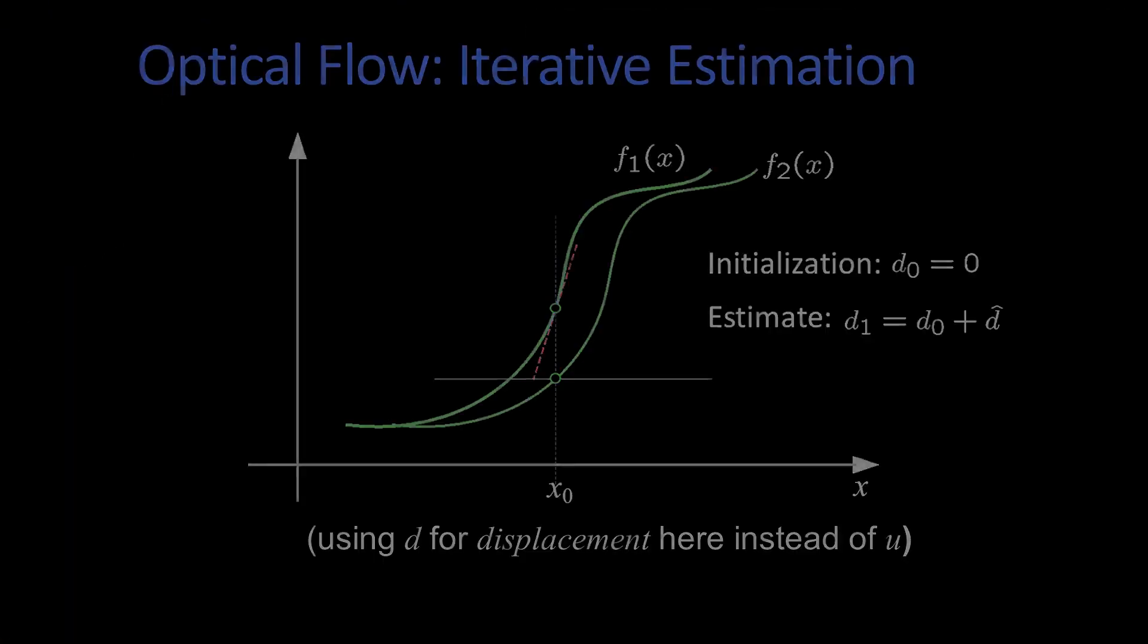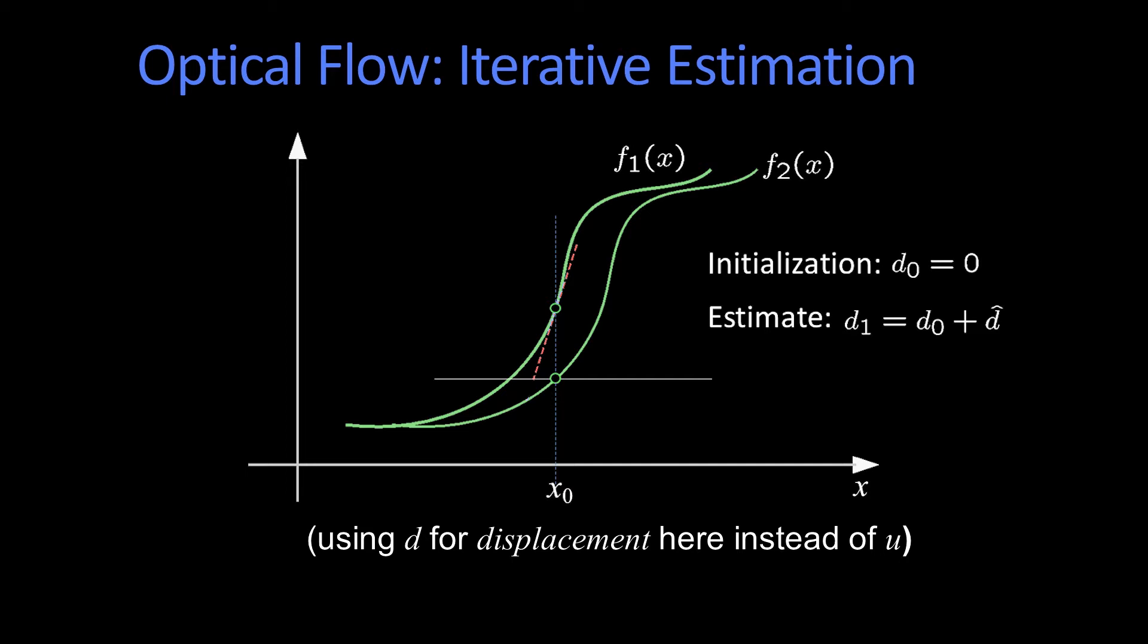Now I have to estimate the next one, d1, by figuring out what the new displacement is. That's what this new little delta d is going to be. So how do I do that? I have to compute these tangents, and you can see the tangents are right there.